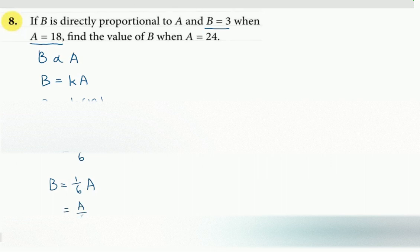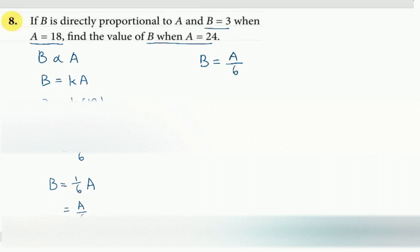Next, we will try to find what the question asks. So we want to find the value of b when a is 24. Using our formula, b is a over 6. Let us substitute a is 24: 24 over 6. Therefore, b is 4.